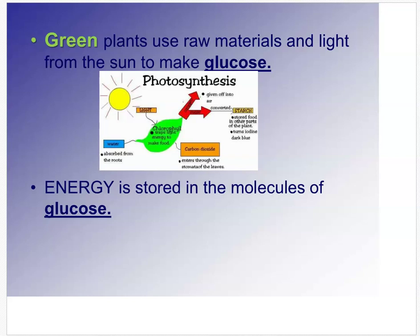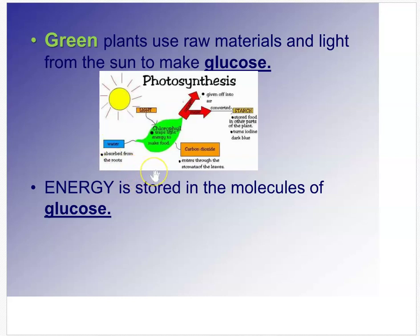Green plants use raw materials and light from the Sun to make glucose — they do this by photosynthesis. Light energy from the Sun, water absorbed by the roots, and carbon dioxide from the air are used. Chlorophyll is produced, which then releases oxygen into the air. The excess energy is converted into starch, stored in the roots and other areas of the plant.